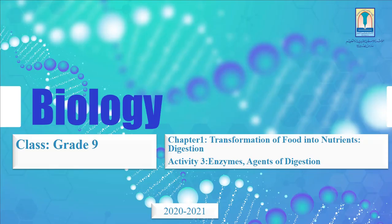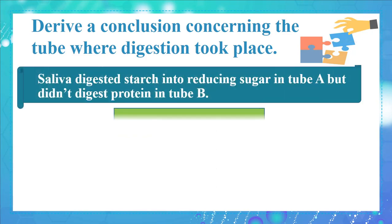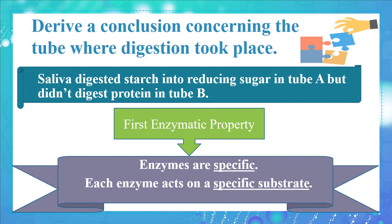Greetings, ninth graders. In this video we will continue studying about enzymatic properties. Recall that in the previous video we ended up with the first enzymatic property: enzymes are specific — each enzyme acts on a specific substrate.